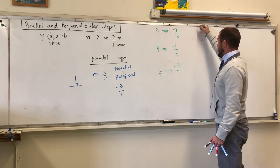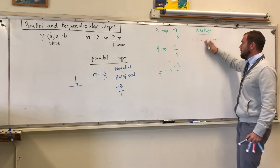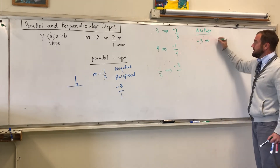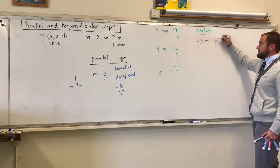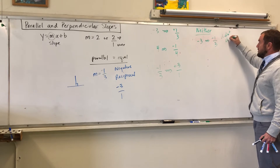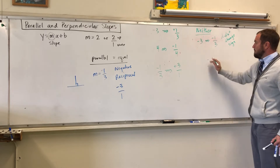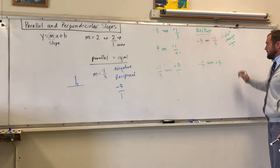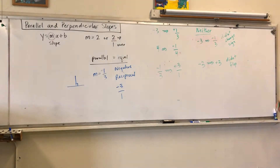If you have a 'neither' case — where it's not parallel or perpendicular — it would look like: I have negative 3, I flipped it, but I didn't change the sign. That's not going to be perpendicular because the sign didn't change. Or maybe I have negative 3 and I make it positive 3, but I didn't reciprocate or flip. That wouldn't be perpendicular either.